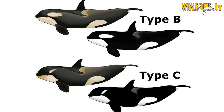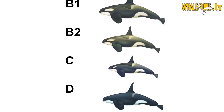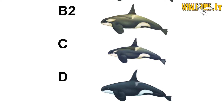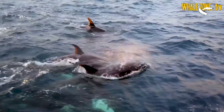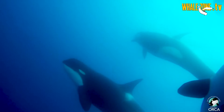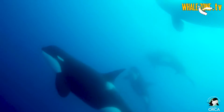Types B and C have very distinctive yellowish coloration. This comes from the diatoms found on their skin — an algae — and they also have a very prominent dorsal cape. Type D, also known as the subantarctic killer whale, has a very tiny eye patch and a distinct shape, and has really only been seen a few times in nature.